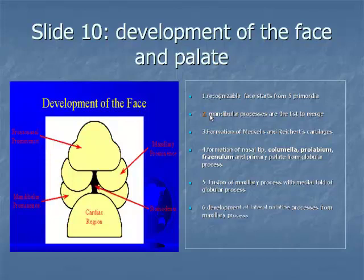Item 6: however, posterior to this anterior fusion of the maxillary process to the nasal processes, the developing nasal floor is open to the oral cavity. Within the primitive stomatodium, lateral palatine processes develop from the median edges of the maxillary process to give rise to the secondary palate. At this stage, the developing tongue nearly fills the oral-nasal cavity completely and reaches the nasal septum.